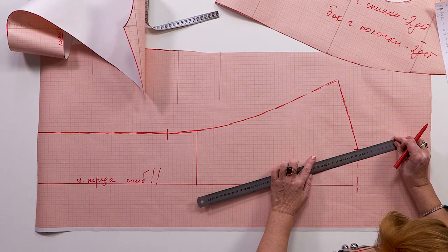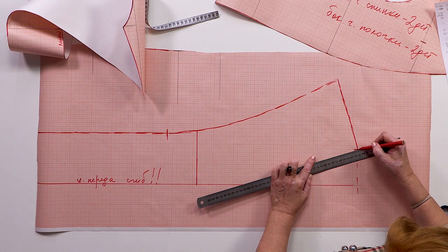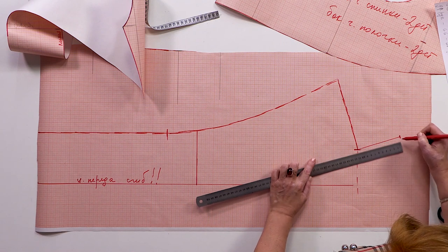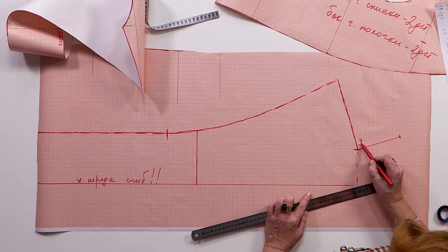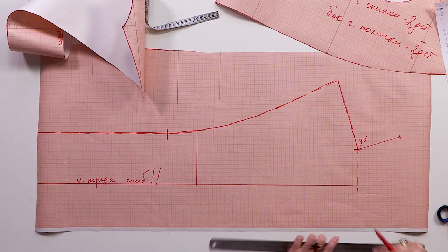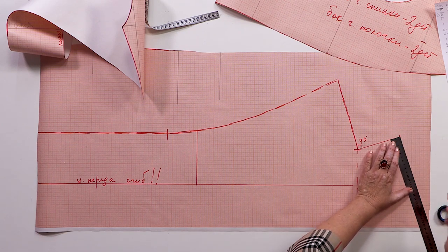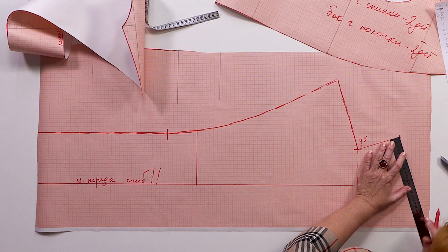1 cm for the seam allowance. That makes 11 cm in total. That means that I need to raise the shoulder top for 11 cm. This angle should be straight. And this one as well.